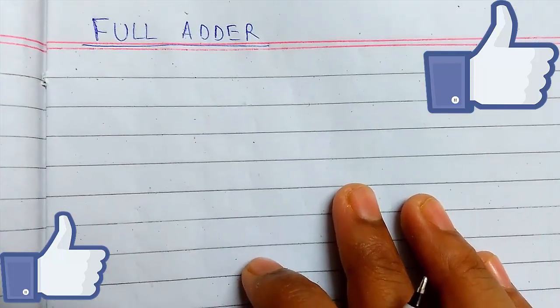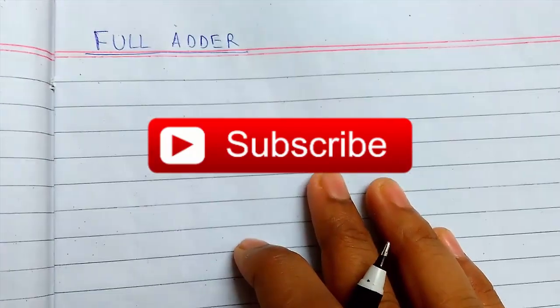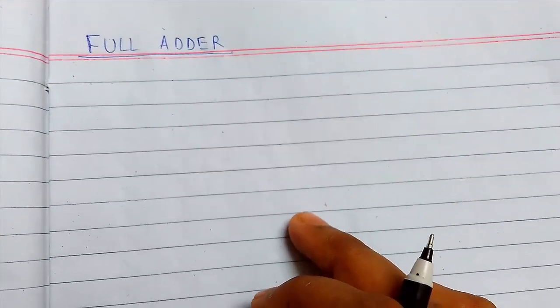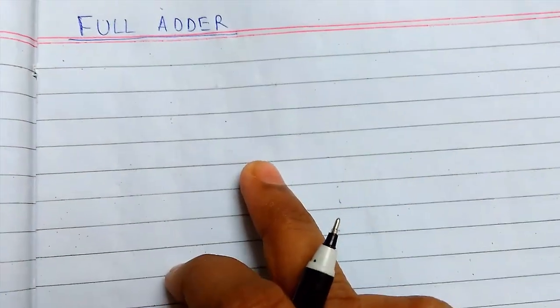Welcome back guys. Today we will be continuing combinational and arithmetic logic circuits. We'll be studying about full adder. As we previously seen, a half adder only adds two input bits, but a full adder can add three input bits.